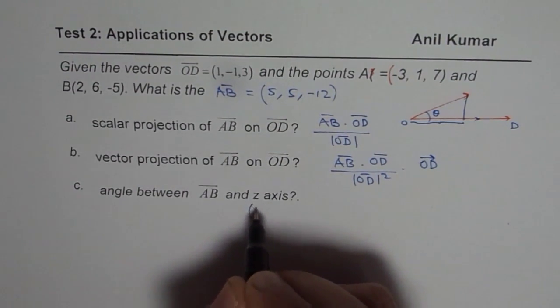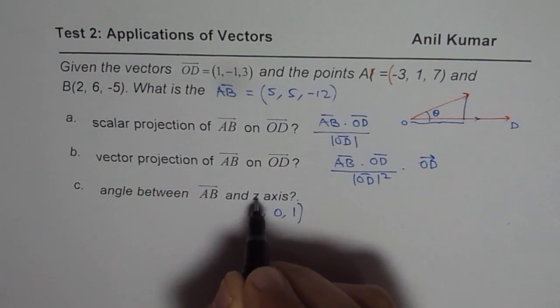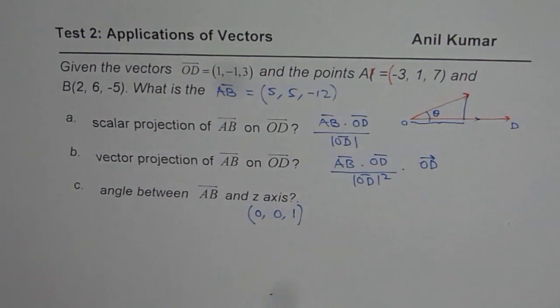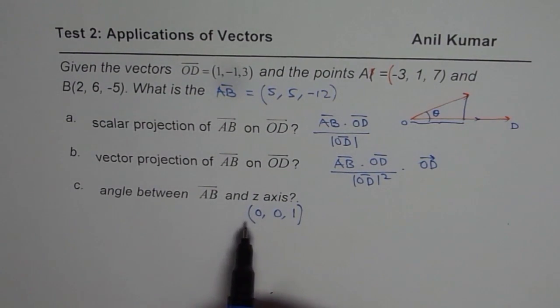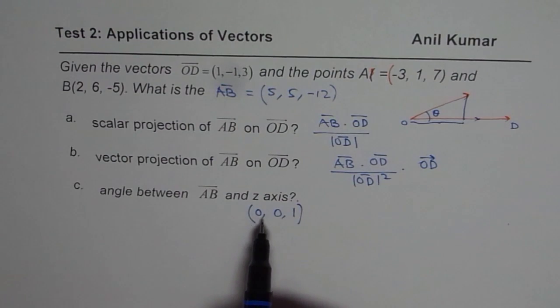Let us say along the Z axis, we could take X component will be 0, Y component will also be 0. Let us take 1 as the component along the Z axis. So now we can find the angle between AB and Z axis. We can use the dot product to find the answer.